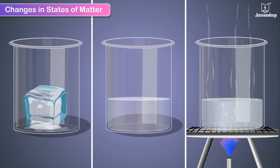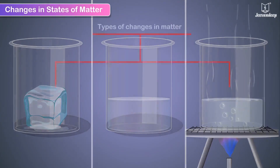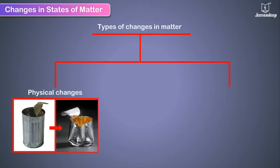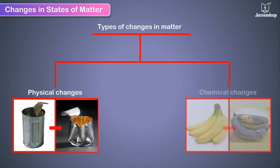There are two types of changes in matter: physical changes and chemical changes.